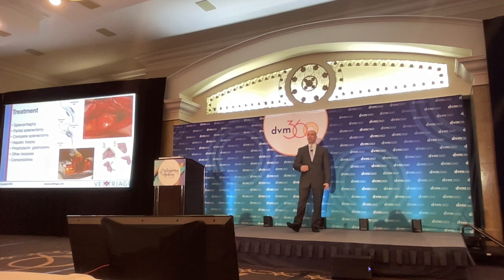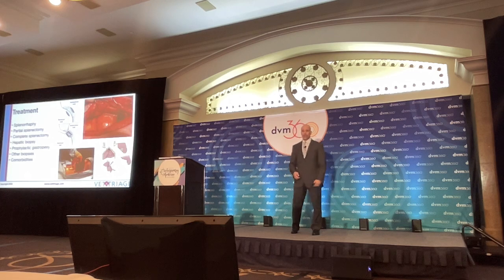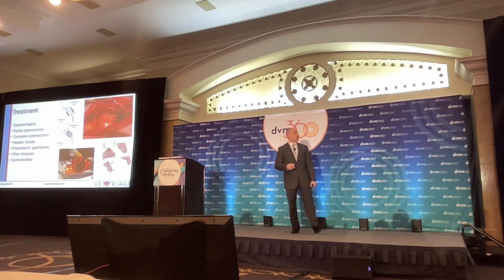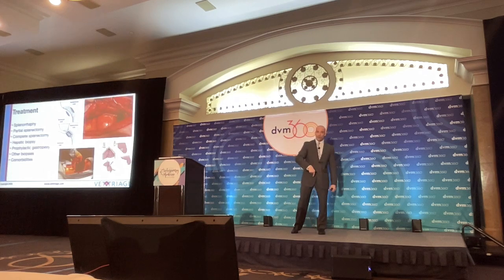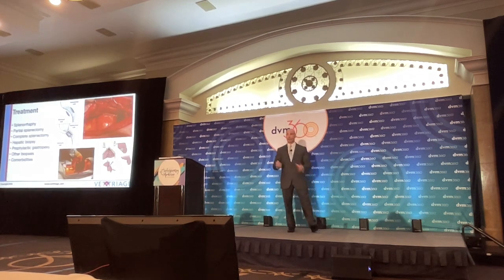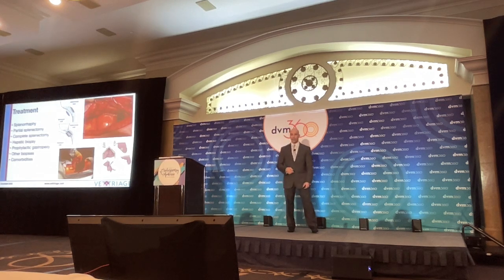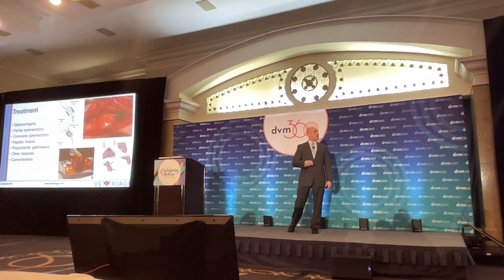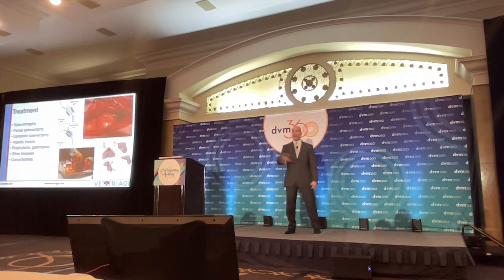These are your three splenic surgeries. Splenorrhaphy — I don't think I've ever done one of these — is basically for splenic laceration repair, probably most often done by accidental iatrogenic laceration of the spleen going through the linea alba during another procedure. Partial splenectomy — nobody here is ever going to do that with a splenic mass. It's going to be complete splenectomy all day long. And every splenectomy is getting a liver biopsy.